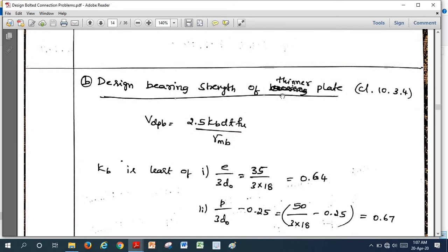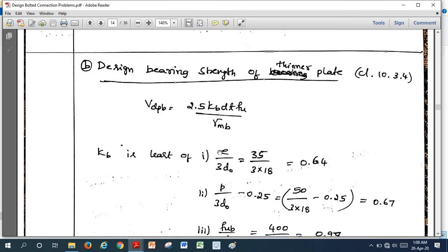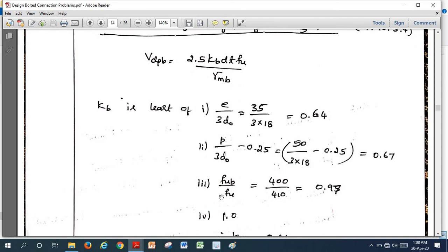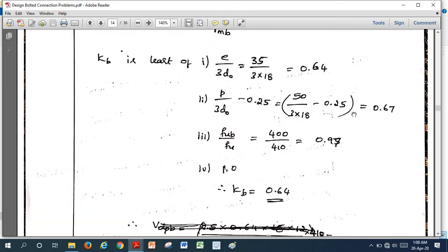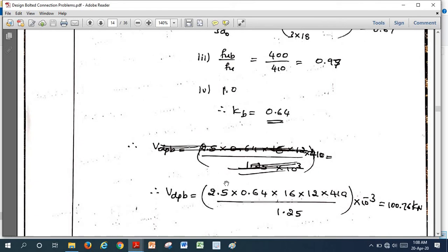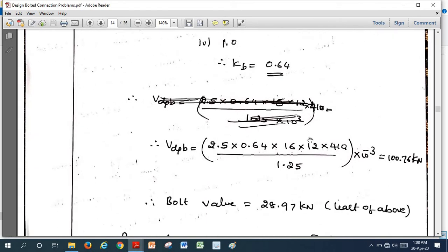Now if you calculate bearing strength of the bolt with respect to the thinner plate, according to clause 10.3.4, this is the formula where Kb is the least value of all these four. If you calculate Kb, the least value is 0.64. If you substitute into the formula, here also we should take the least plate thickness. We will get 100.76 kN.